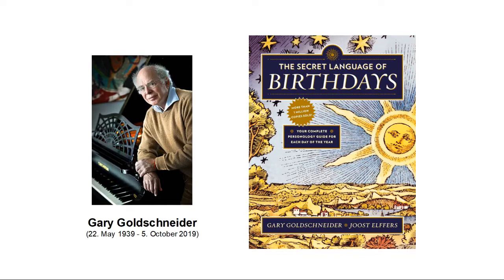Gary Goldschneider was a personologist. This means that he was an astrologer that focused mainly on psychological astrology, which is deriving people's personalities from their horoscope and looking at their interpersonal relationships. Probably his most famous book is called The Secret Language of Birthdays. In this book Gary describes a unique personality for every single day of the year. In the introduction of the book you can also find the description of the zodiac period system we are going to focus on in this video.